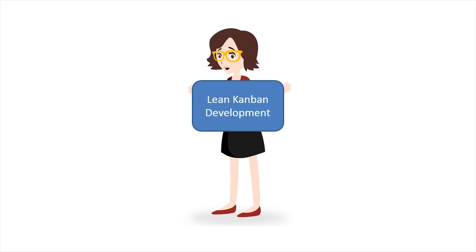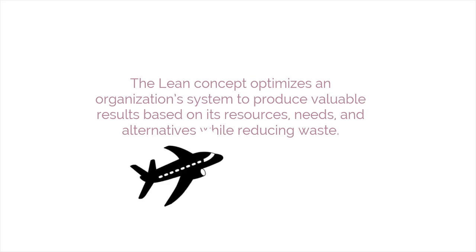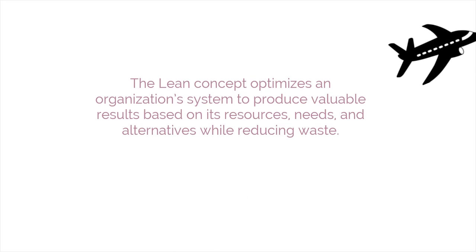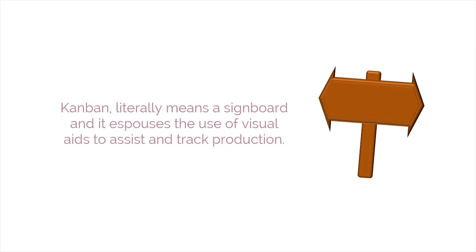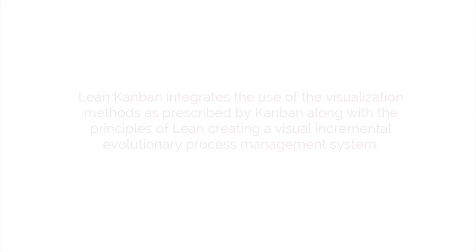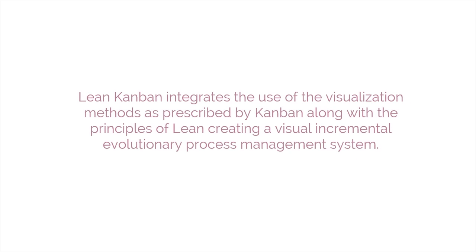The first method we will discuss is Lean Kanban development. The Lean concept optimizes an organization's system to produce valuable results based on its resources, needs, and alternatives while reducing waste. Kanban literally means a signboard and espouses the use of visual aids to assist and track production. Lean Kanban integrates visualization methods as prescribed by Kanban along with the principles of Lean, creating a visual incremental evolutionary process management system.